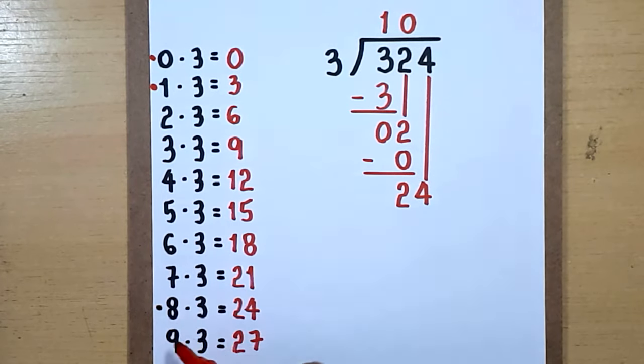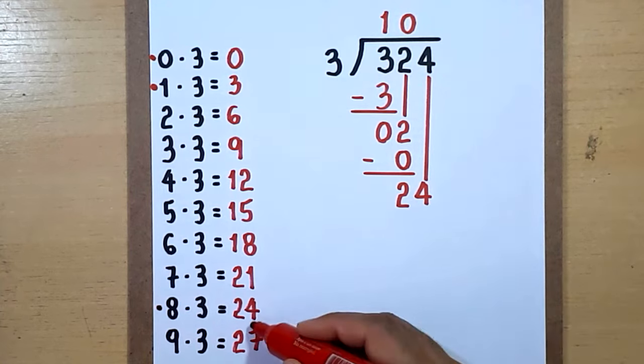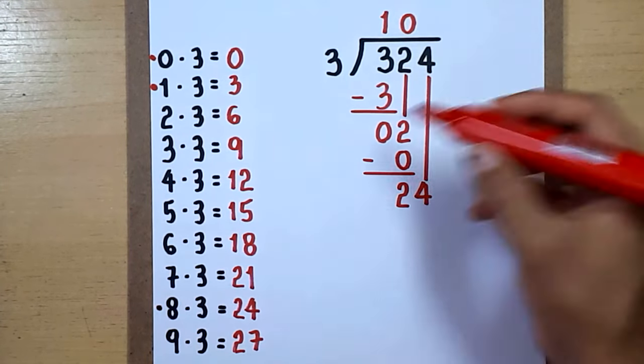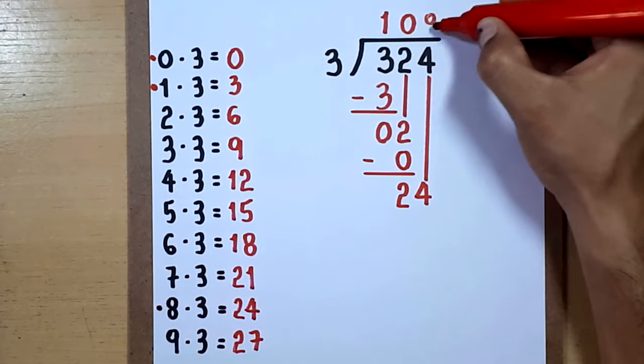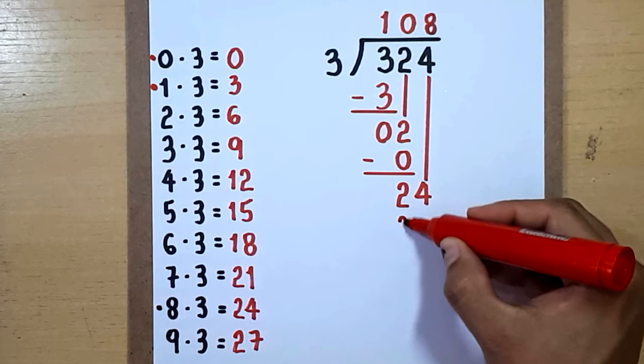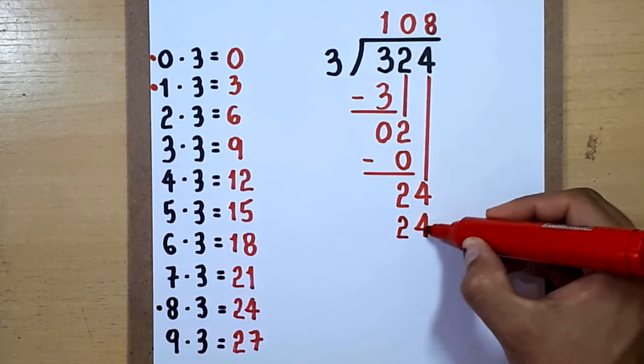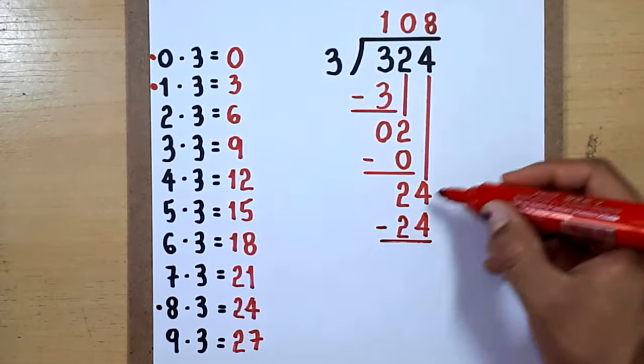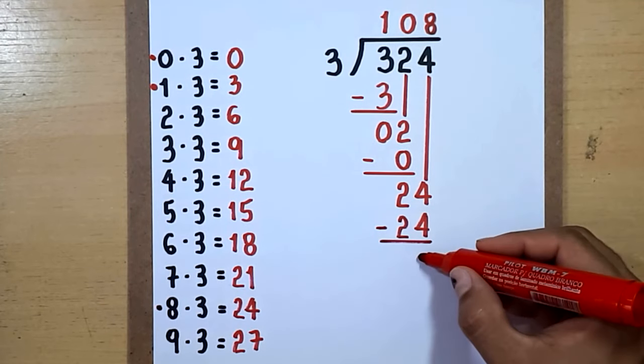Since 8 times 3 equals 24, the product we get can be equal but not more. So we write 8 here. Since 8 times 3 equals 24, we write 24 below this 24 here and we subtract: 24 minus 24 equals 0.